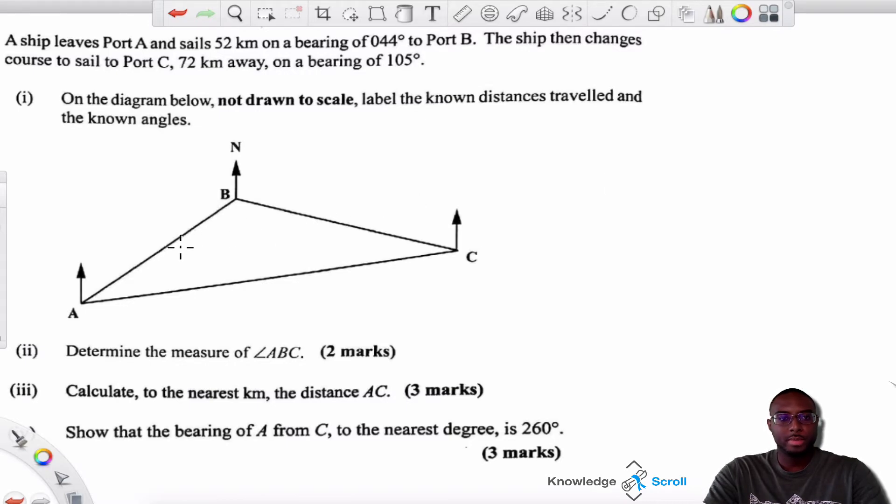So in the diagram here, it is a bearings question and you have to read the question carefully. It says a ship leaves port A and sails 52 kilometers on a bearing of 44 degrees to port B. The ship then changes course to sail to port C 72 kilometers away on a bearing of 105 degrees. The first thing we must do is fill in any information. The 44 degrees should go here because this represents the bearing from A to B. The 105 degrees should go here as this is the bearing of C from B. And the distances should go here where you have 52 kilometers and you have 72 kilometers here.